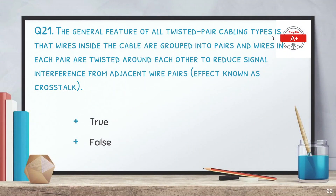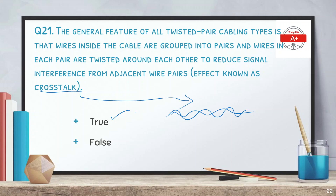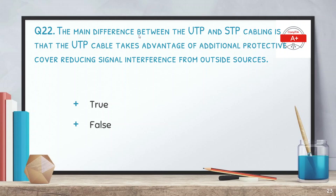Question 21: the general feature of all twisted pair cabling types is that wires inside the cable are grouped into pairs, and wires in each pair are twisted around each other to reduce signal interference from adjacent wire pairs — an effect known as crosstalk. Is this true or false? The correct answer is true. In UTP or STP, the twisting reduces noise and interference, also known as crosstalk.